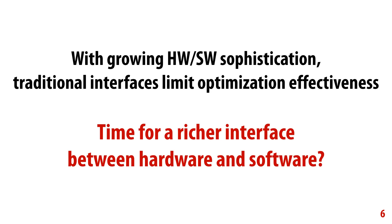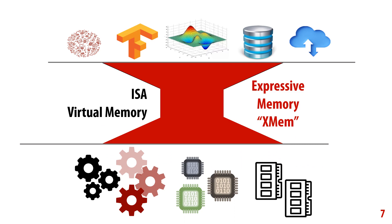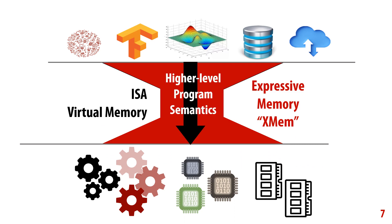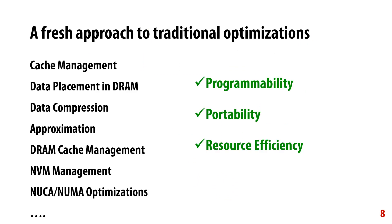To fundamentally change how we optimize for performance, perhaps it's time for a richer interface between hardware and software. In this work, we propose expressive memory, or XMEM, a new cross-layer abstraction that enriches the interface between the application and the underlying hardware. XMEM communicates higher-level program semantics from the application to the underlying system and architecture, which can then be used to aid in performance optimization. Exposing key program information allows the hardware to better adapt to the application and thereby provide better programmability, portability, and resource efficiency.